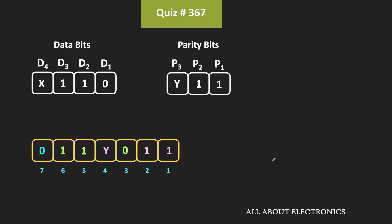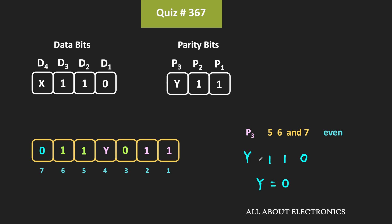Similarly, with the help of parity bit P3, let us find the value of Y. Parity bit P3 represents the overall parity of parity bit P3 and the bits at positions 5, 6, and 7, and the overall parity of this group should be equal to even. Parity bit P3 is equal to Y, while the bits at positions 5, 6, and 7 are 1, 1, and 0. For even parity, the value of Y should be equal to 0, so that the parity of this group will remain even. Therefore, the value of Y should also be equal to 0.